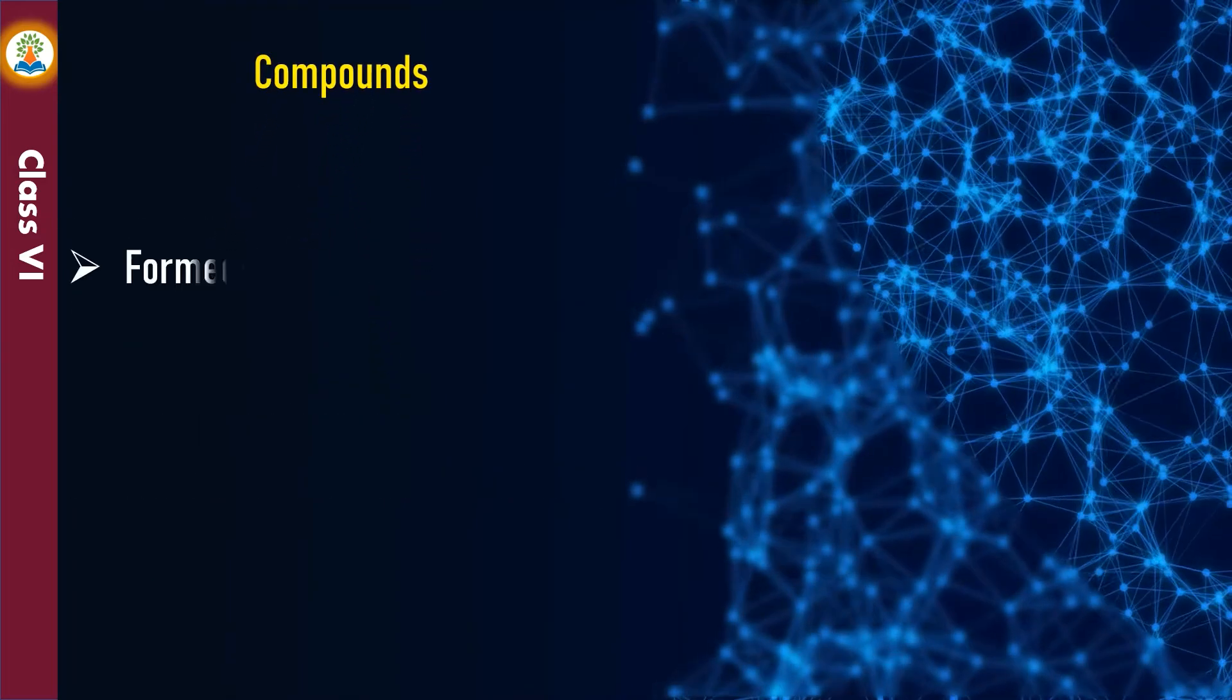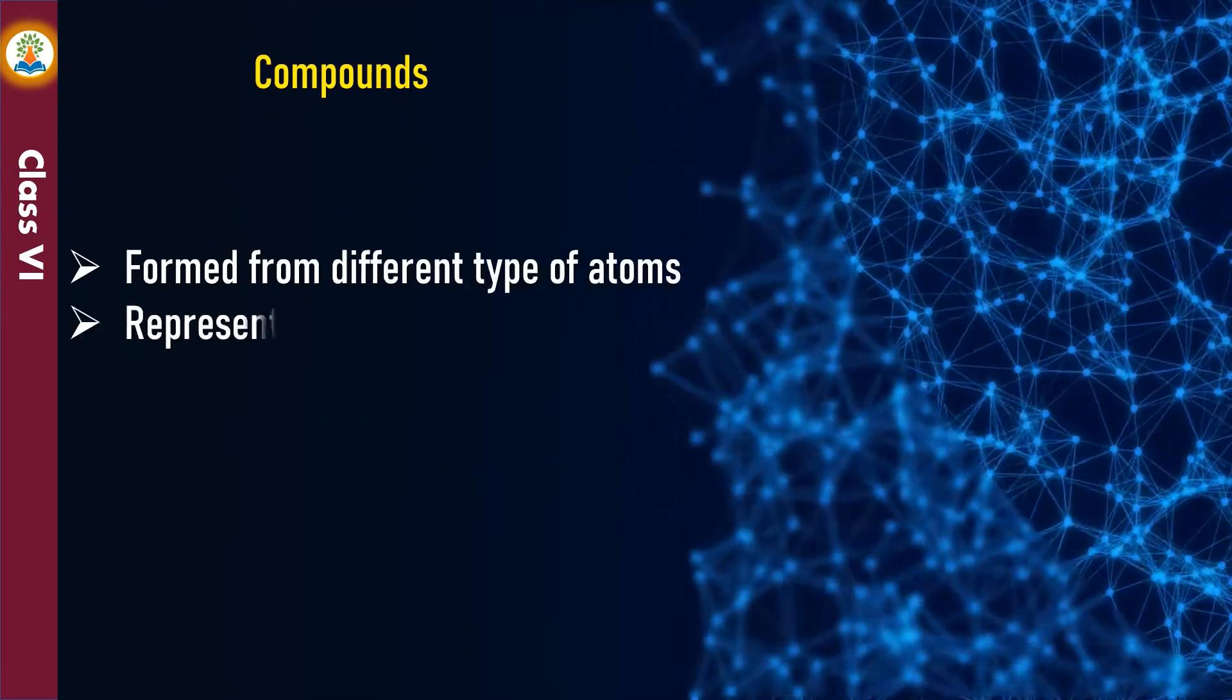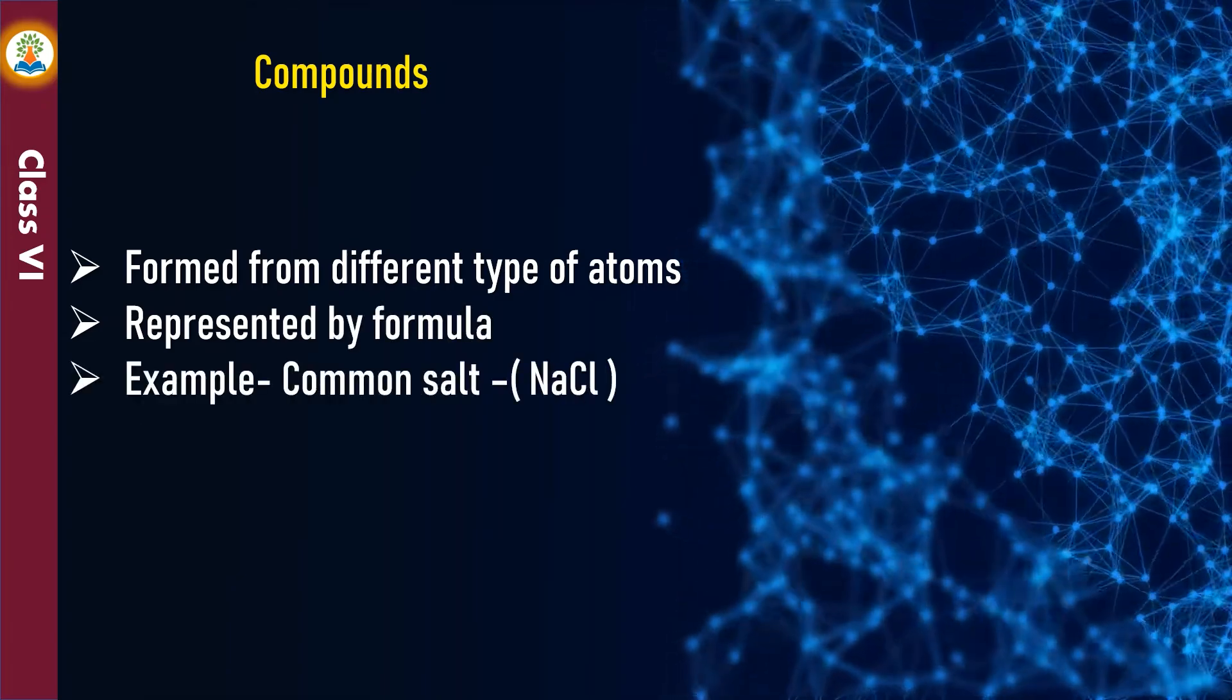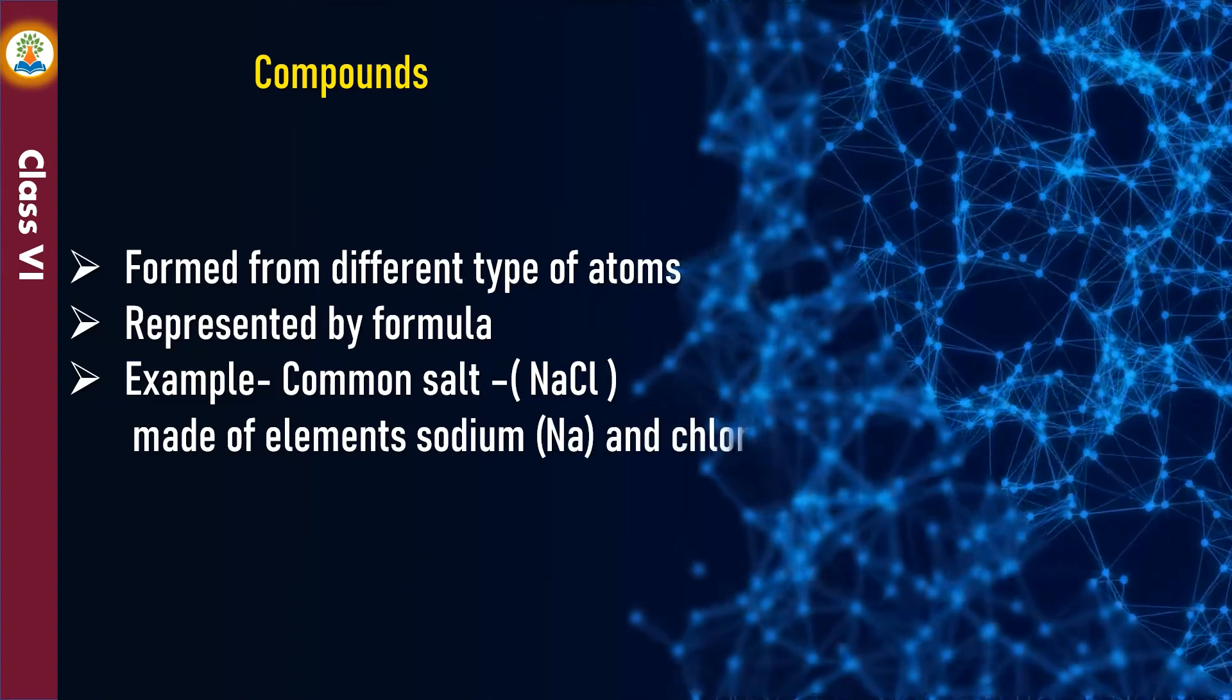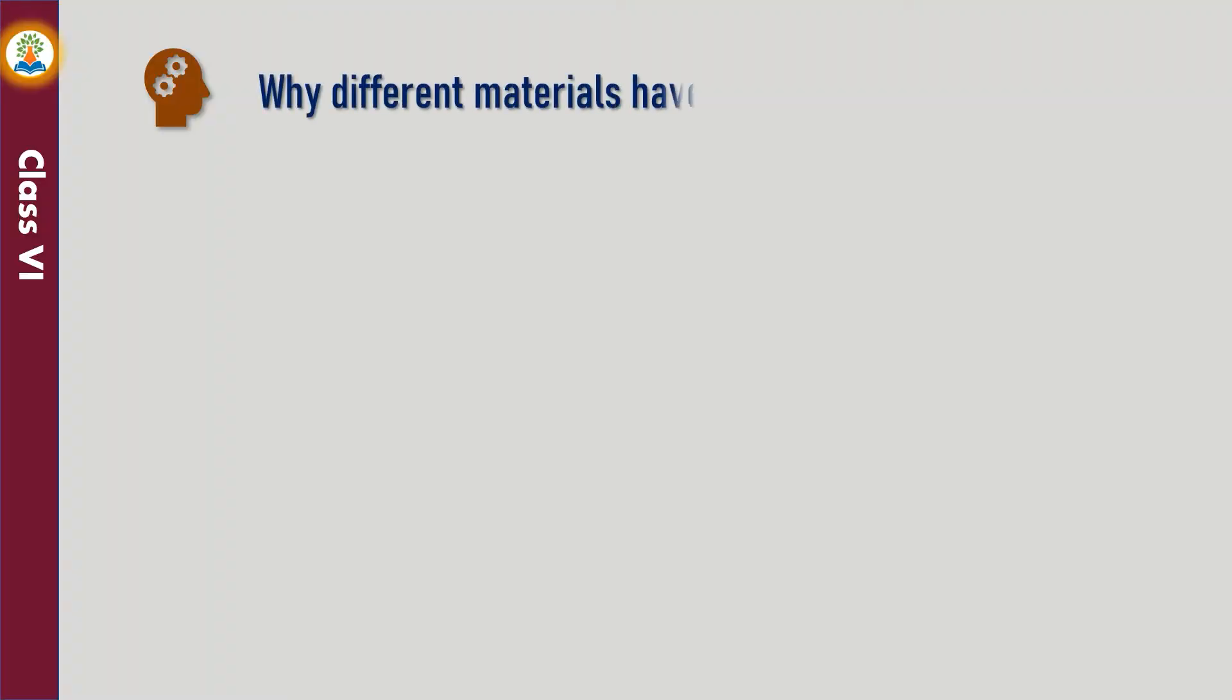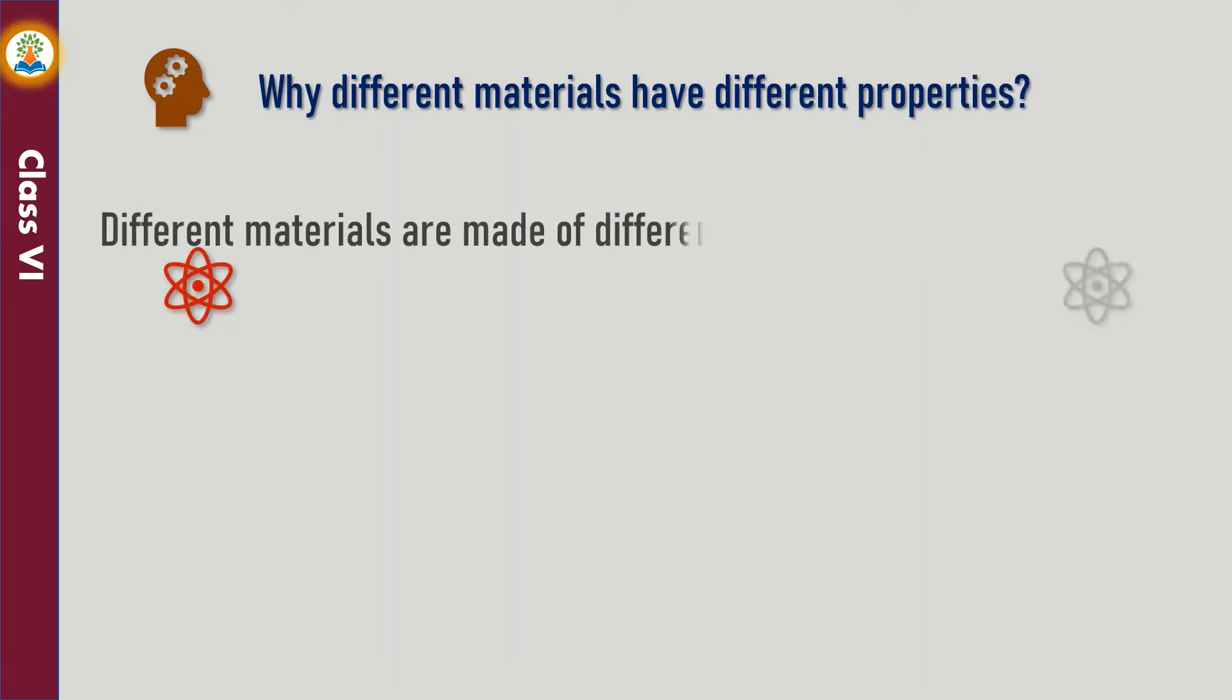Compounds are formed from different types of atoms. It is represented by a formula. For example, common salt NaCl is made of elements sodium and chlorine. Why do different materials have different properties? Different materials are made of different elements and compounds and have different arrangement of atoms or molecules.